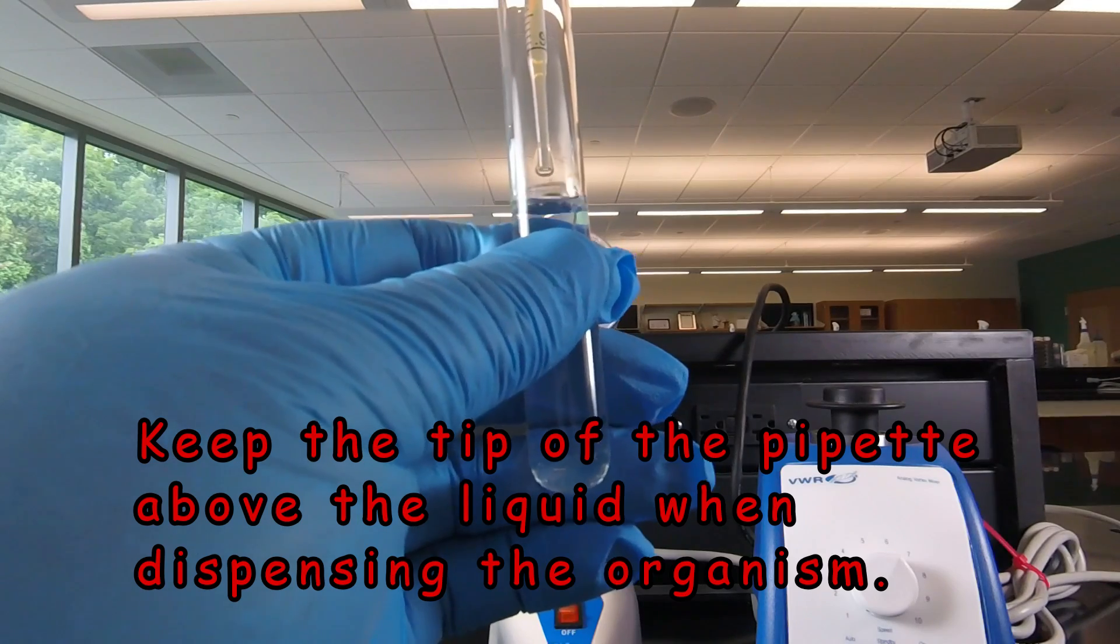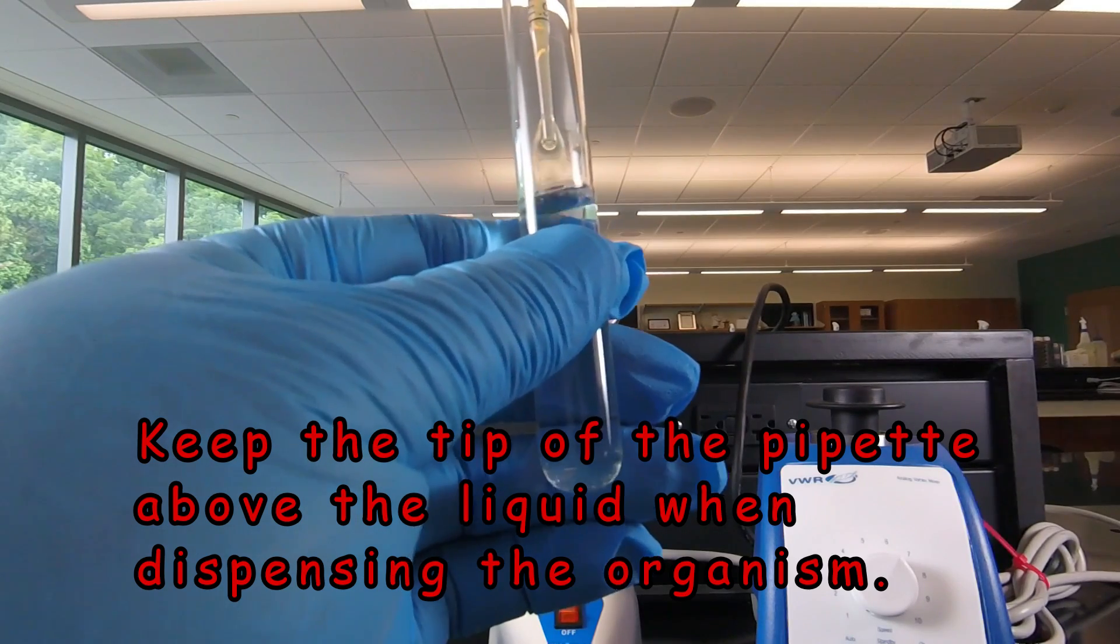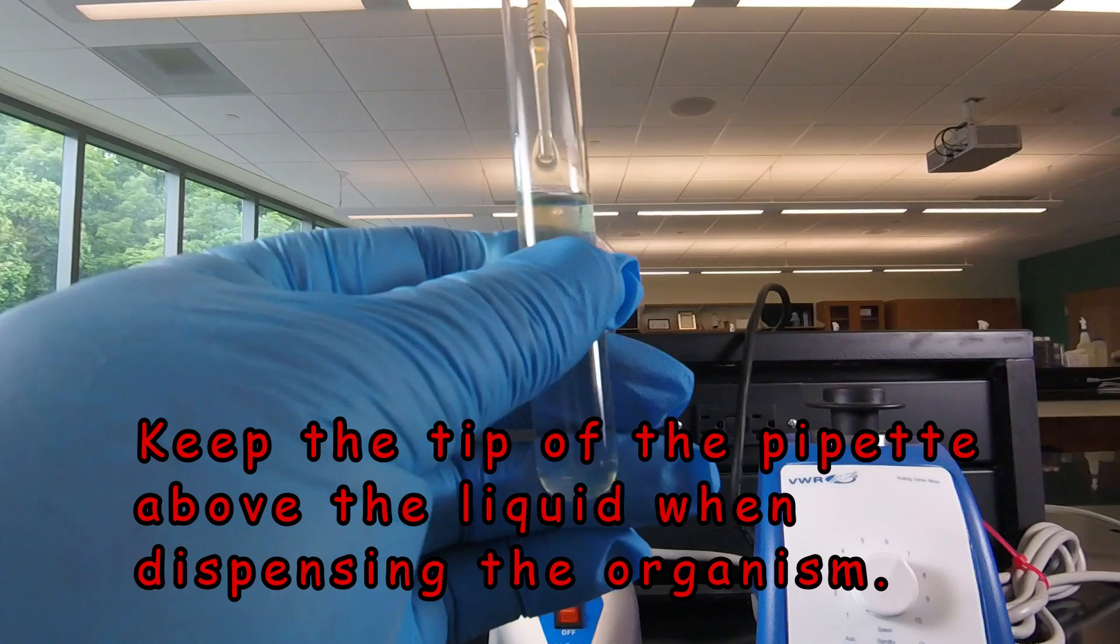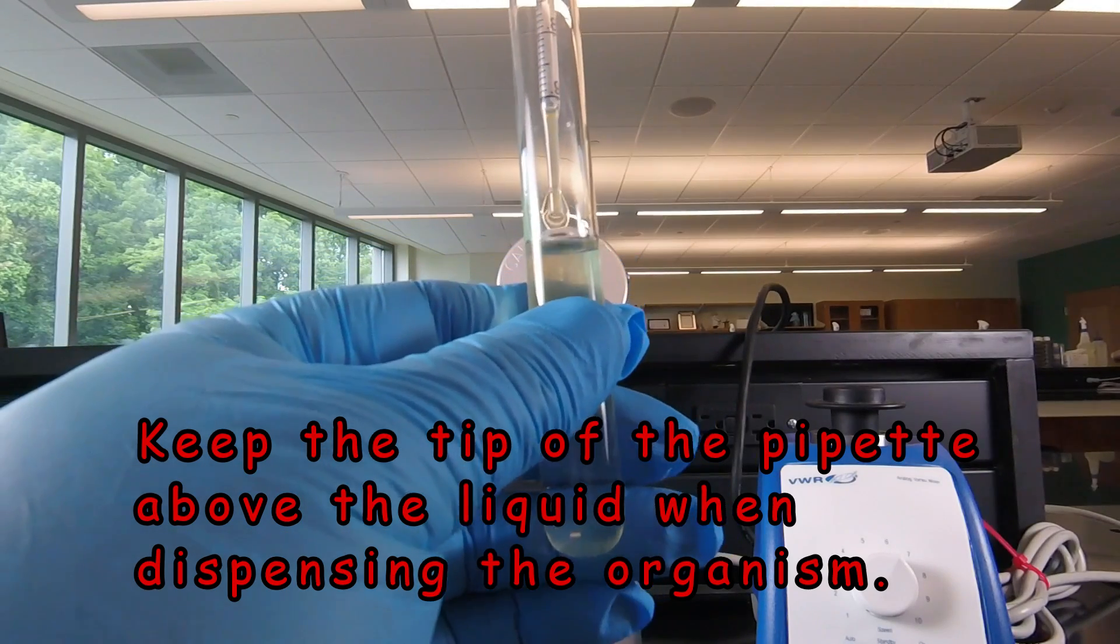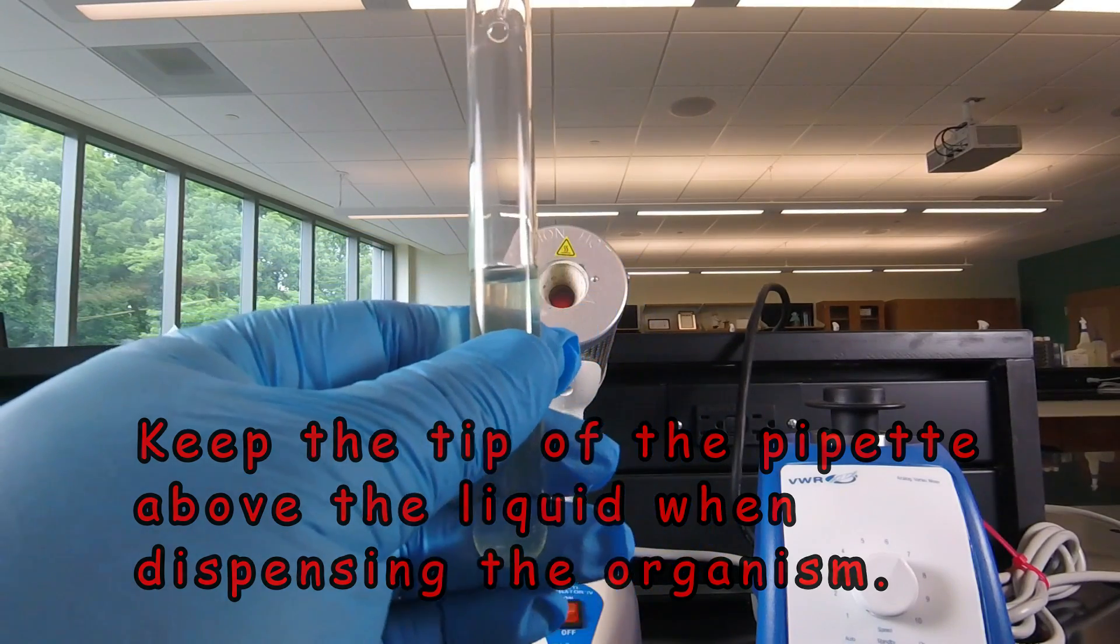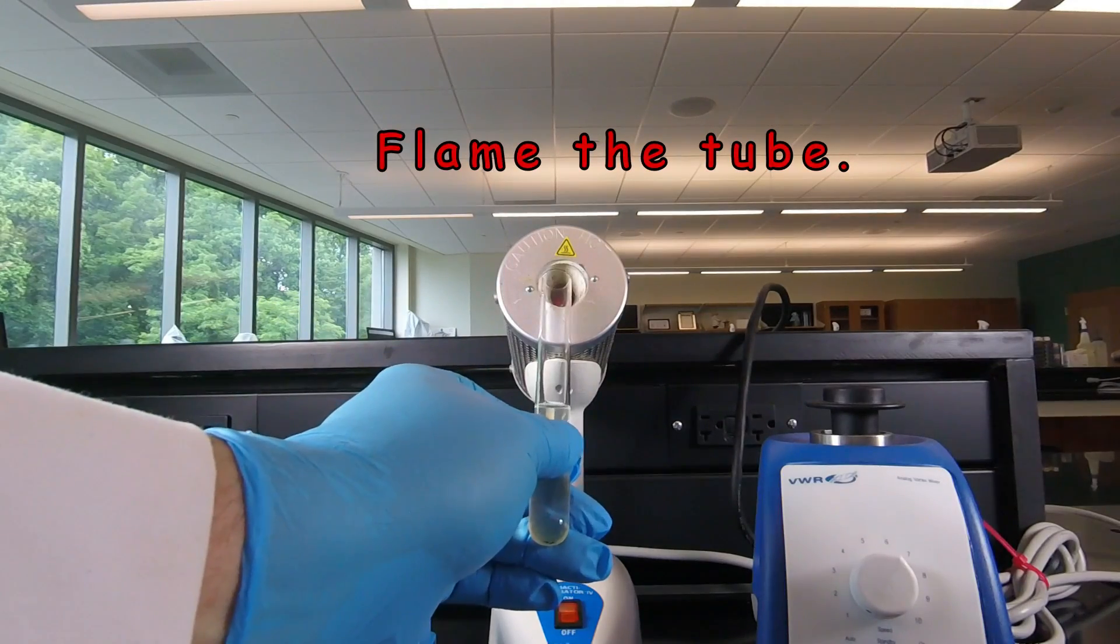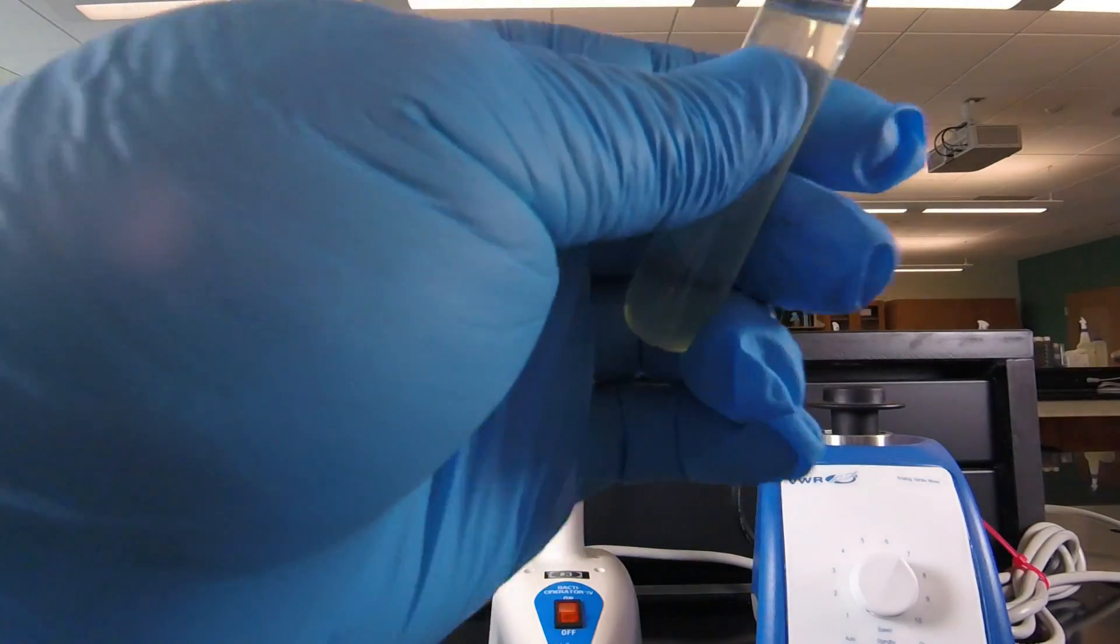So we're going to turn the knob upwards which lets the liquid flow out, watching the bottom of the pipet so that we can see when all the liquid has left. Then again we would flame the tube and put the cap back on.